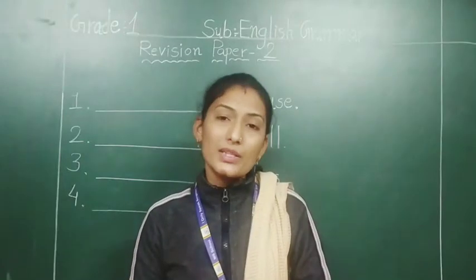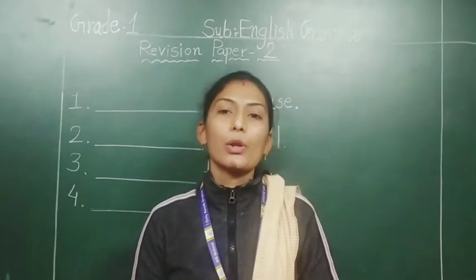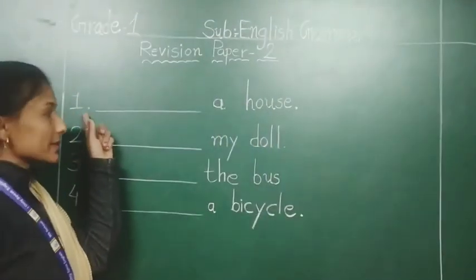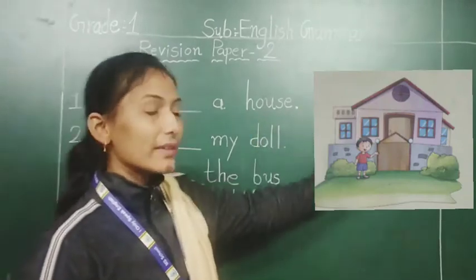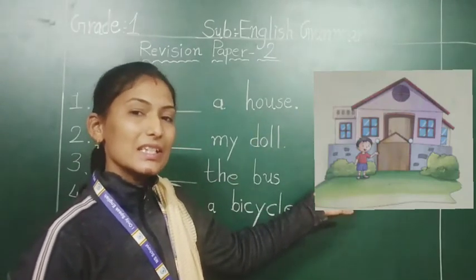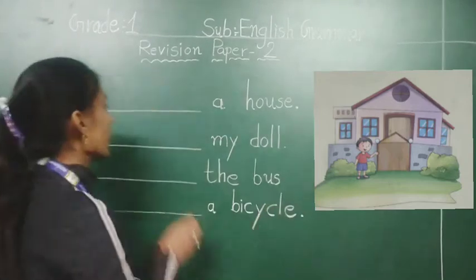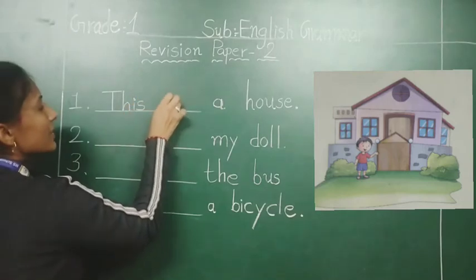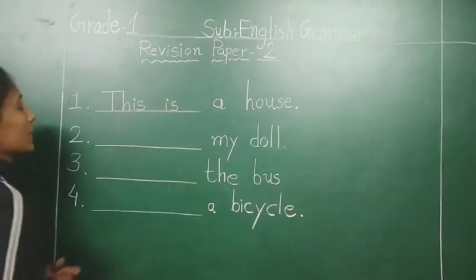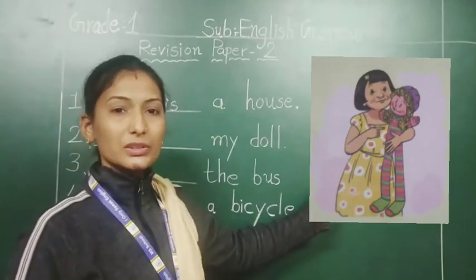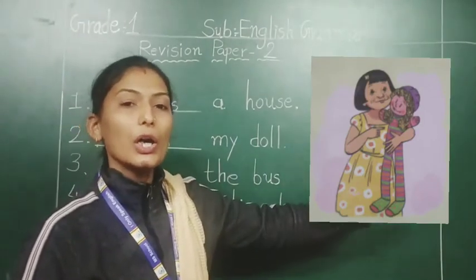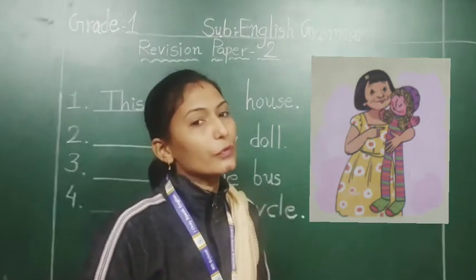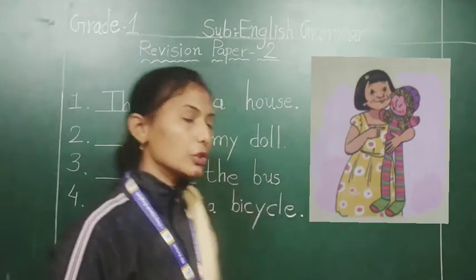Students, now I will explain you some examples of 'this' and 'that.' First, look at this picture — there's a house. This is a house, so we will write here: This is. Second, look at this picture — a door is near by her, so we will write here: This is my door.